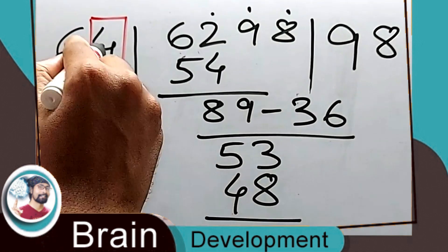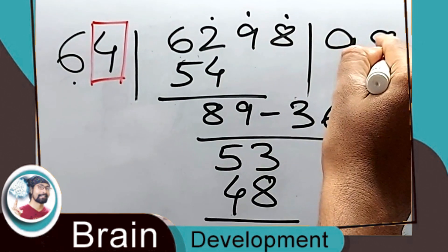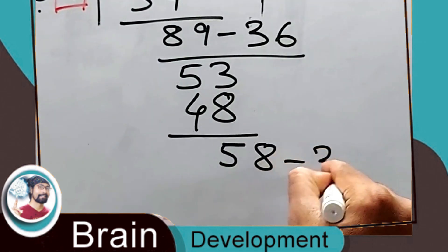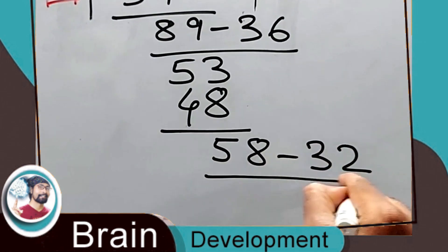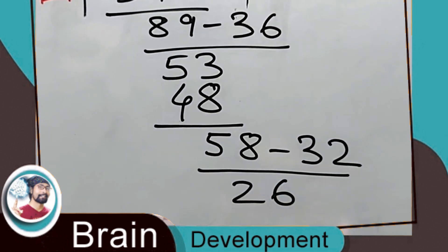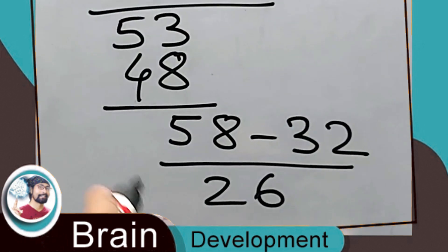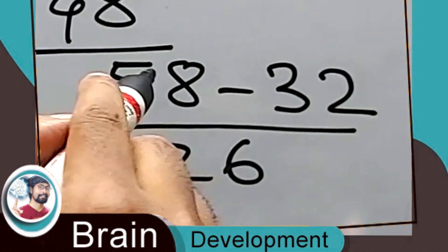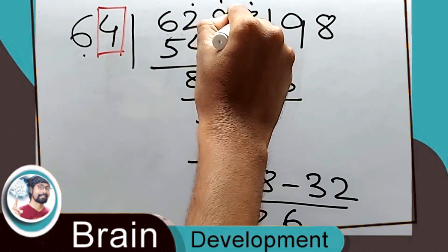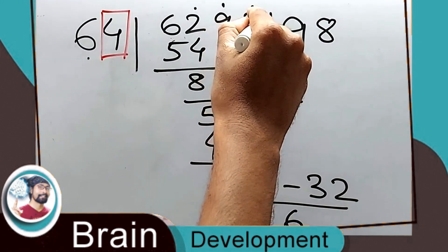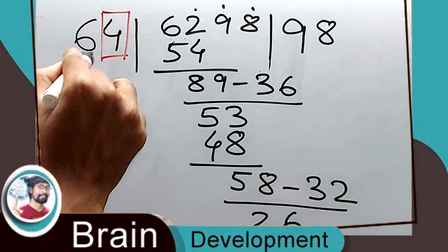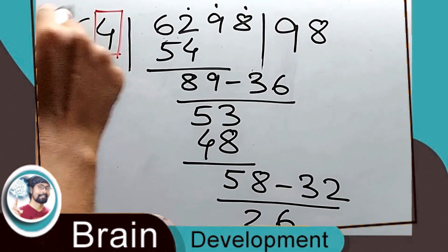Now this 8 comes down. We multiply 4 by 8 — four eights are 32. So 58 minus 32 is 26. This 26 is the remainder because there are no more digits after 8, and 26 is smaller than the divisor 64.